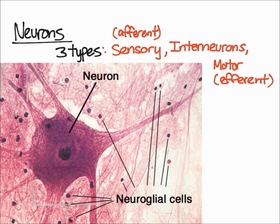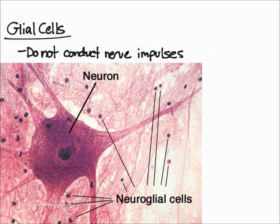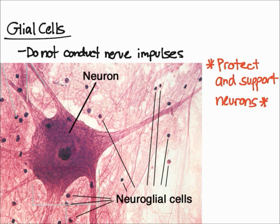Next, let's talk about another component of nervous tissue: glial cells. As you can see in the diagram, glial cells are those smaller dots that look much smaller than the main neuron. One important thing to remember is that, unlike neurons, they do not conduct nerve impulses.